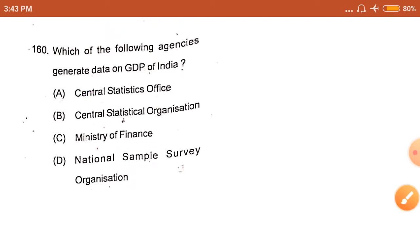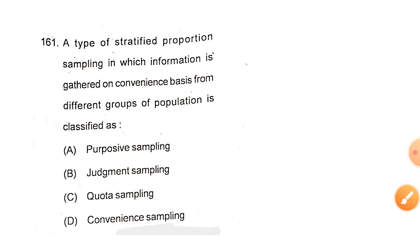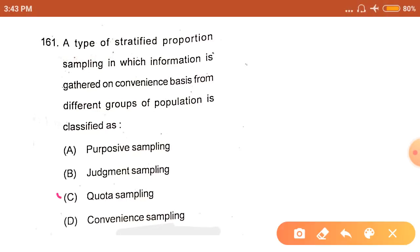A type of stratified proportion sampling in which information is gathered on convenience basis from different groups of population is classified as... The answer is quota sampling.